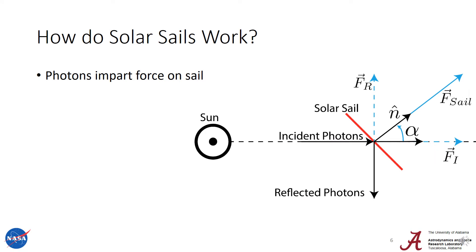Moving on to solar sailing: photons come out of the sun and reflect off a solar sail. Because the solar sail is reflective, the incident photons create one force on the solar sail while the reflected photons create a second force on the sail. This happens due to conservation of momentum, and this ensures that there is a force in the sail normal direction, which is sometimes parameterized by alpha.